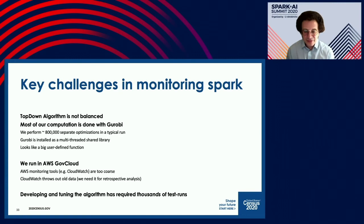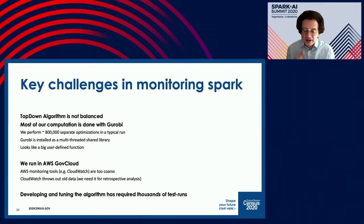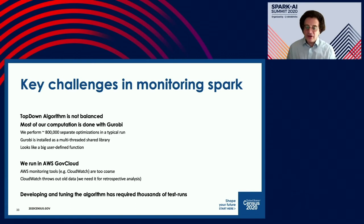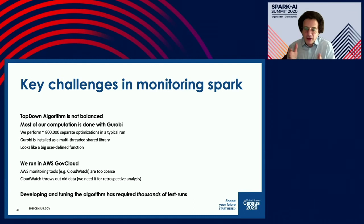We're running in the AWS GovCloud, and it turned out the AWS monitoring tools like CloudWatch were too coarse — not recording data fast enough, throwing data away before we could look at it, and not synced up with our runs. So we developed our own monitoring system specifically for this application. We're only going to run the top-down algorithm once in 2021, but to develop and tune the algorithm we have to run thousands of trials and tests, and we need a system for keeping track of all those runs.